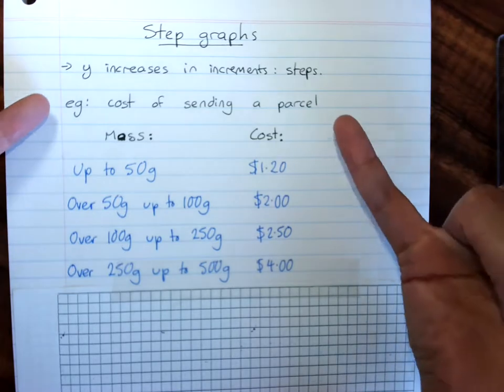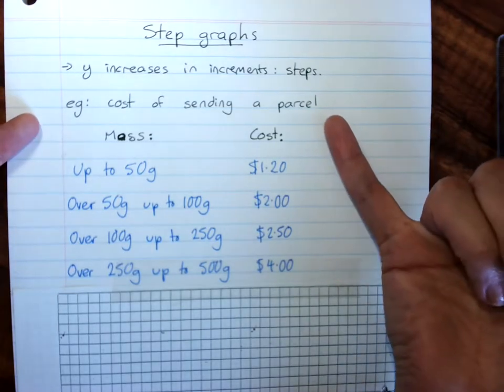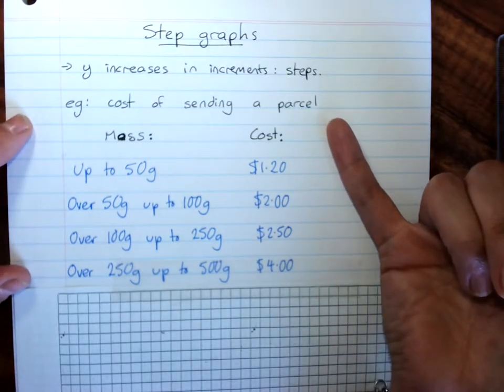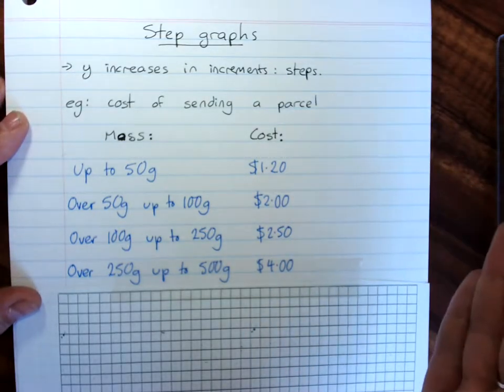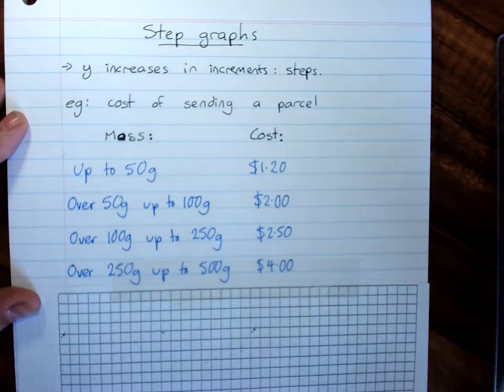A fairly typical example is the cost of sending a parcel. It doesn't have a linear relationship, so a 100 gram parcel isn't slightly less expensive than a 101 gram parcel.